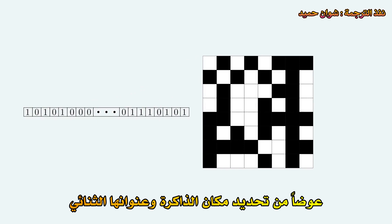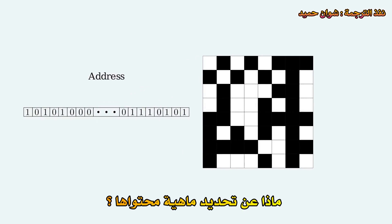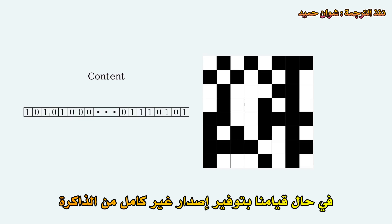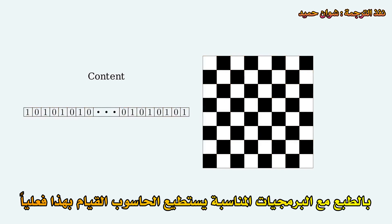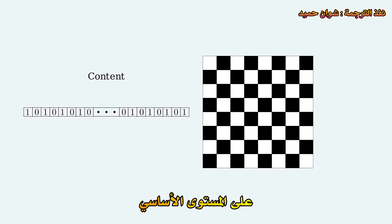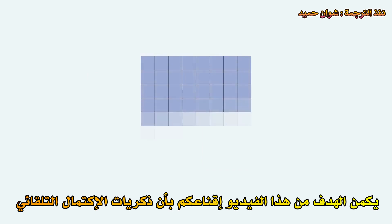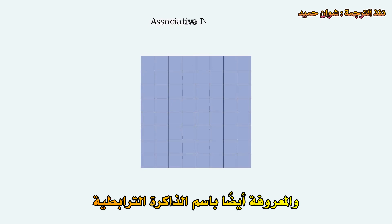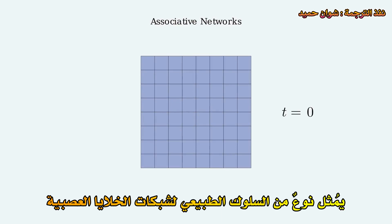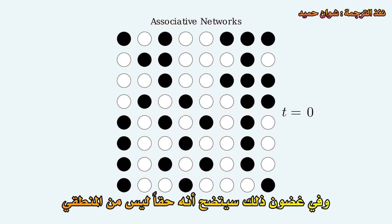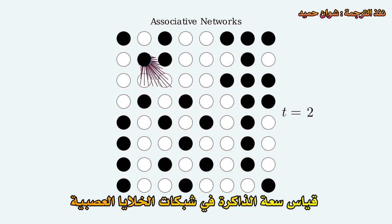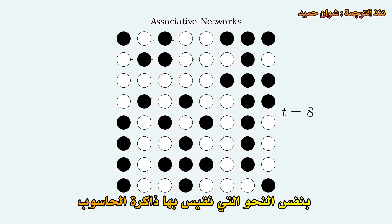Now imagine a different kind of memory. Instead of specifying the WHERE of a memory — its binary address — how about we could specify the WHAT: its content. A memory system where, if we provide an incomplete version of the memory, it just sort of autocompletes. With the right software, your computer can already do this, but it's not how computer memory works on its basic level. The point of this video is to convince you that autocompleting memories, also known as associative memory, is a kind of natural behavior of networks of neurons. With that, it'll become clear that it doesn't really make sense to measure memory capacity in networks of neurons in the same way we measure computer memory.